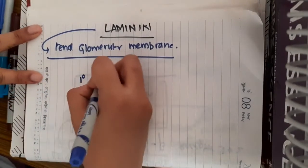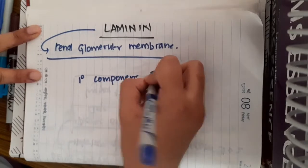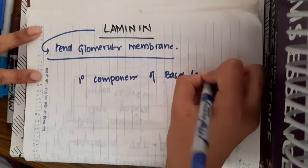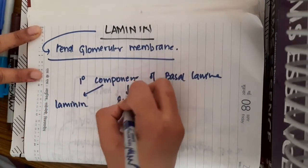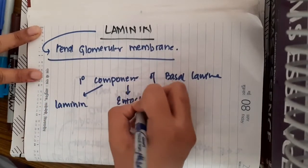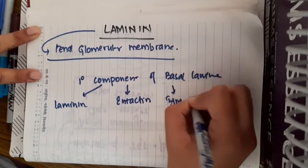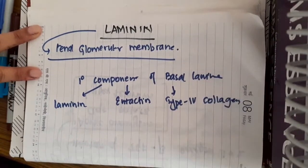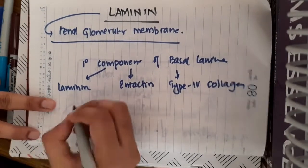Laminin is also a primary component of basal lamina. The other primary components of basal lamina include intactin and type 4 collagen, in addition to laminin.